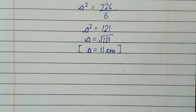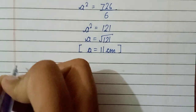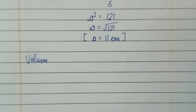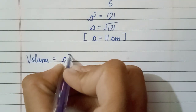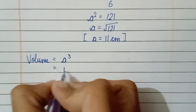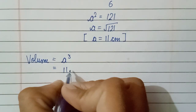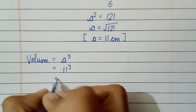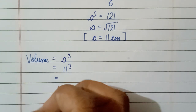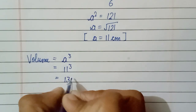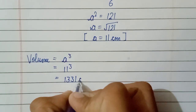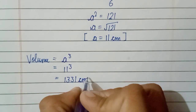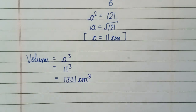Now we will find the volume. The volume of a cube is equal to a cubed, that means side cubed. The side is 11 centimeter, so the volume is 11 cubed. And 11 cubed is 1331, so the volume of the cube is equal to 1331 centimeter cube.